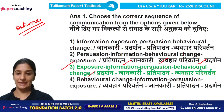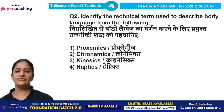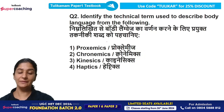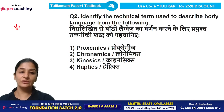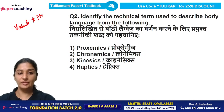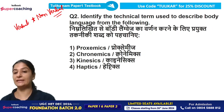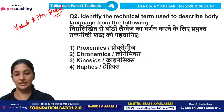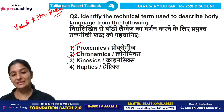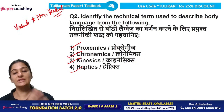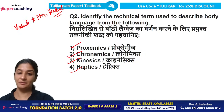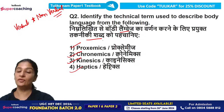Question 2: Identify the technical term used to describe body language from the following options. As we know, communication is broadly divided into verbal and non-verbal types. Here, you need to identify the word from the non-verbal category that describes body language. The options are: proxemics, chronomics, kinesics, and haptics.